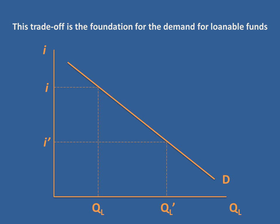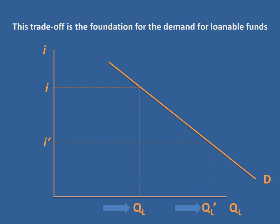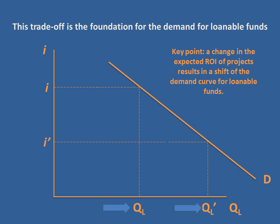We saw before that there was a negative relationship between the interest rate and the quantity of loanable funds demanded — as we decreased the interest rate, more firms would jump in and do new projects, taking out loans. But now we're keeping the interest rate fixed and yet seeing the quantity of loanable funds increasing. The way that would happen is if the expected return on investment increased at all levels of the interest rate. A change in the expected return on investment of projects is going to result in a shift of the demand curve for loanable funds.